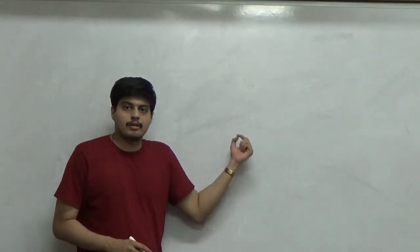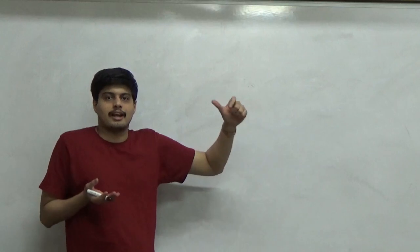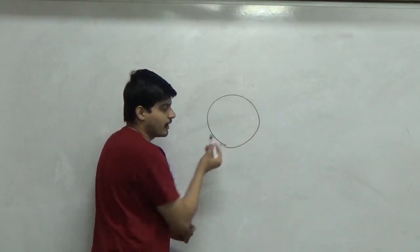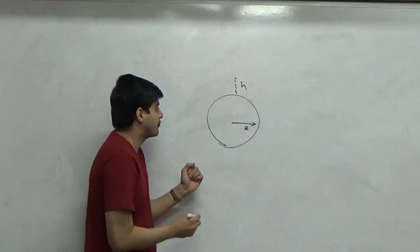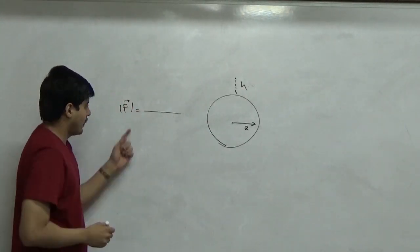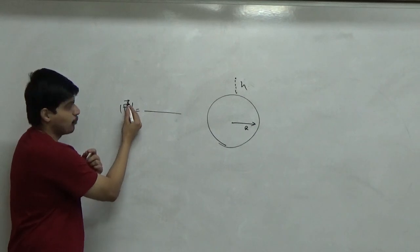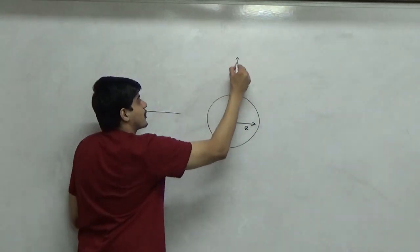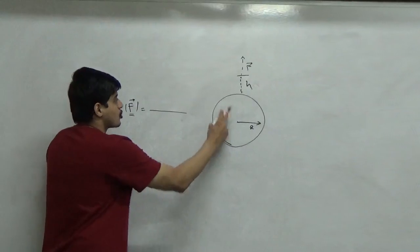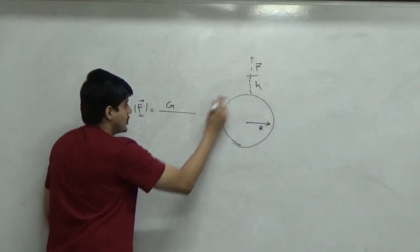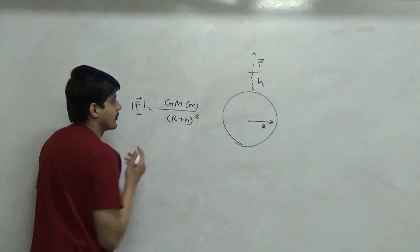After having understood the concept of what happens to a mass at a depth, let's expand it further to understand the behavior of gravity with height. So if this is my earth again with radius r and the object is at a height of h from the surface of earth, I can write the force equation as f bar equals Gm times m upon (r plus h) whole square.